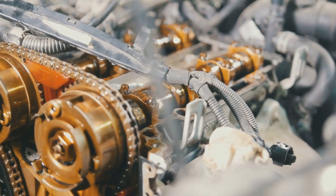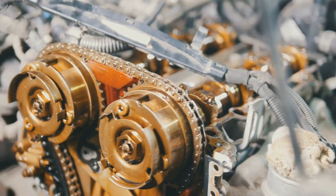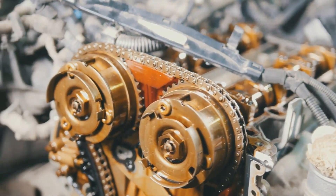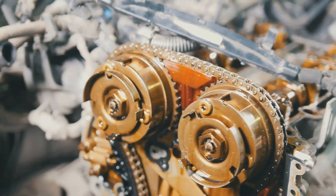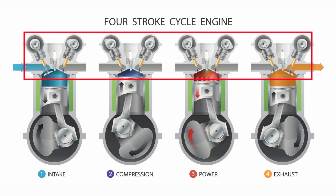A jumped timing chain or belt could also cause the P0300 code. If it jumped a tooth on one of the sprockets, it will cause the intake or exhaust valves to open and close at the wrong time, disrupting the four-stroke cycle and causing random misfires.